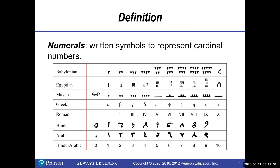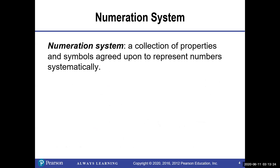Numerals are written symbols to represent cardinal numbers, and these are the different numerals. We have the Babylonian, Egyptian, Mayan, Greek, Roman, Hindu, Arabic, and Hindu-Arabic. I won't test you on all of these, but you may find some in your assignment. What I will emphasize is the Roman numerals. For the remaining ones, you just have to familiarize yourself with them. A numeration system is a collection of properties and symbols agreed upon to represent numbers systematically.